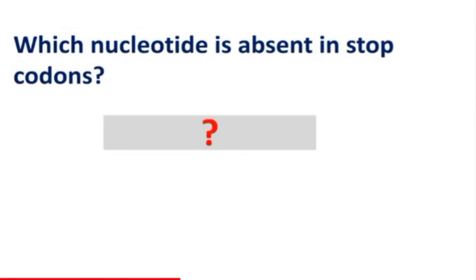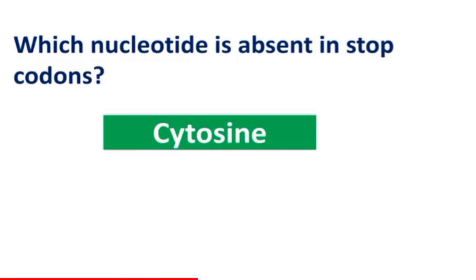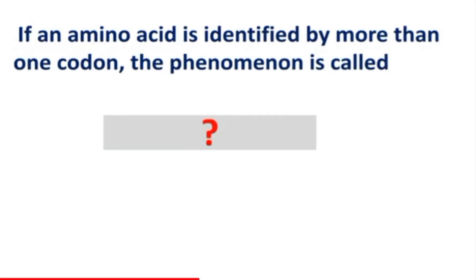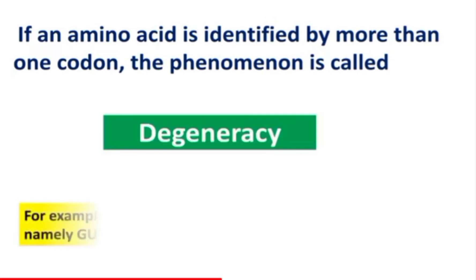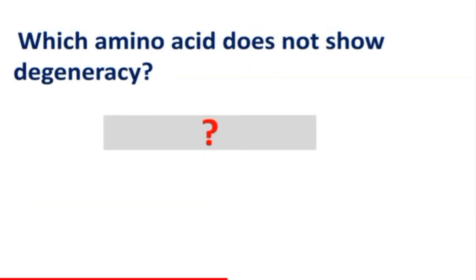Which nucleotide is absent in stop codons? If an amino acid is identified by more than one codon, the phenomenon is called what? Which amino acid does not show degeneracy?